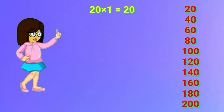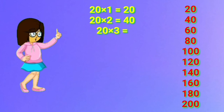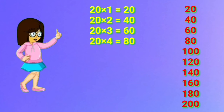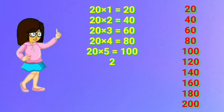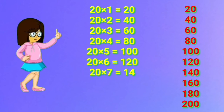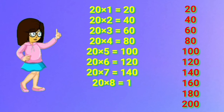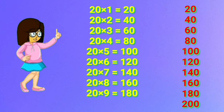20 one's are 20. 20 two's are 40. 20 three's are 60. 20 four's are 80. 20 five's are 100. 20 six's are 120. 20 seven's are 140. 20 eight's are 160. 20 nine's are 180. 20 ten's are 200.